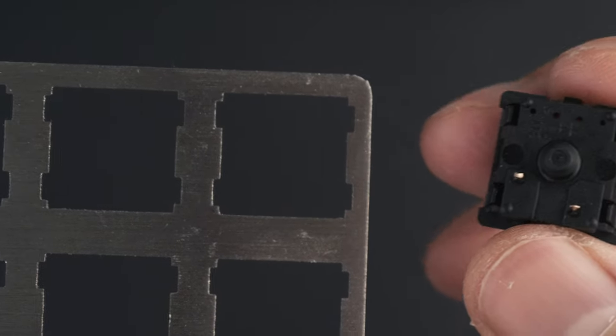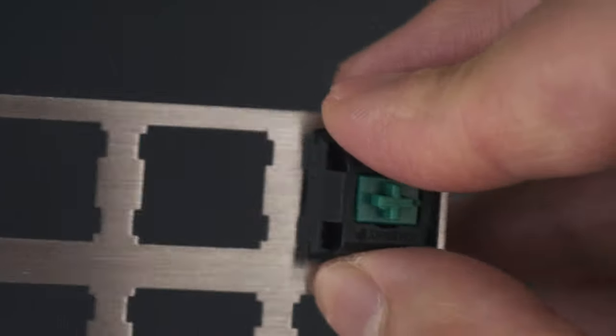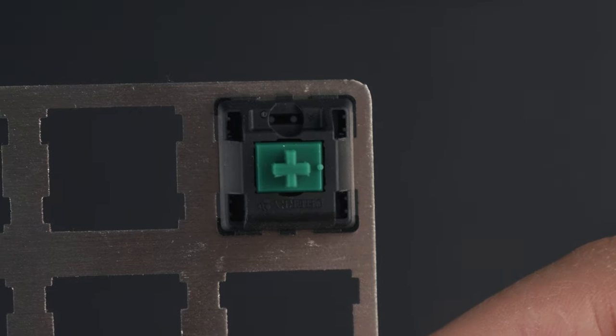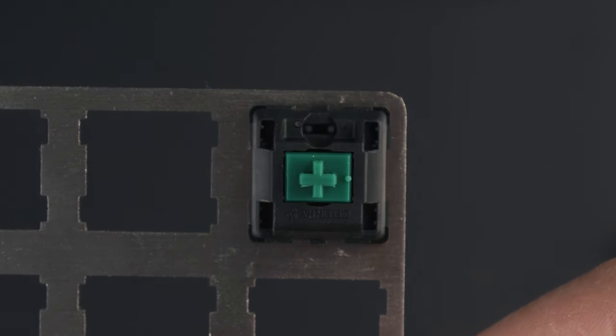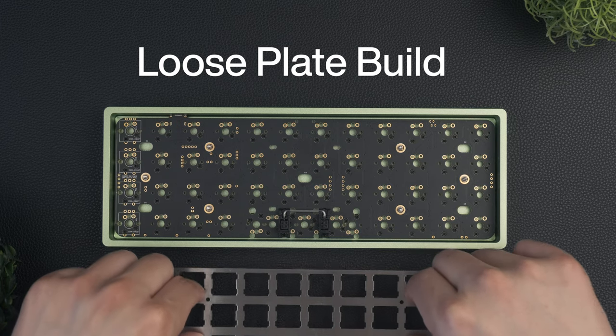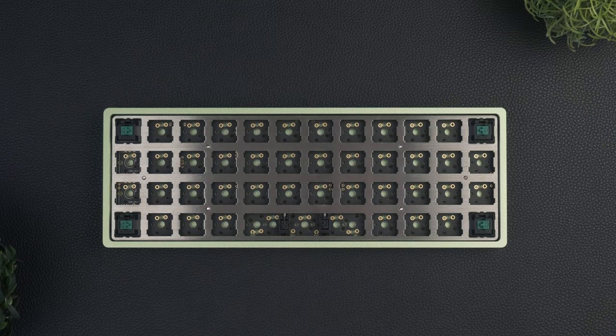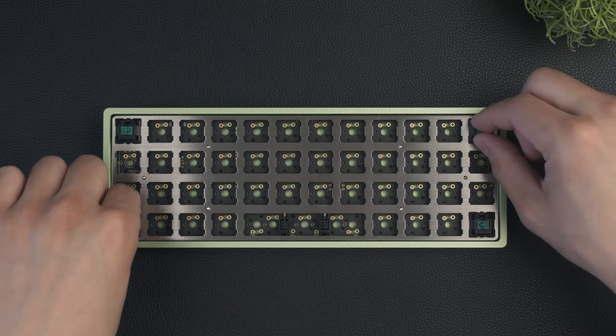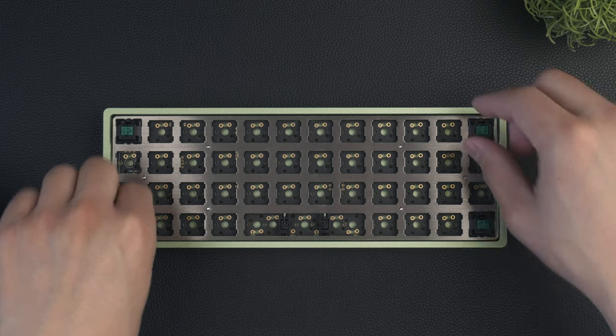For the corners, the pins will be at the bottom. To insert, center the switch over the plate and press firmly until seated. For the loose plate build, place it over the board, lining up the holes with the screws. Then, evenly press down in opposing corners to seat the switches.